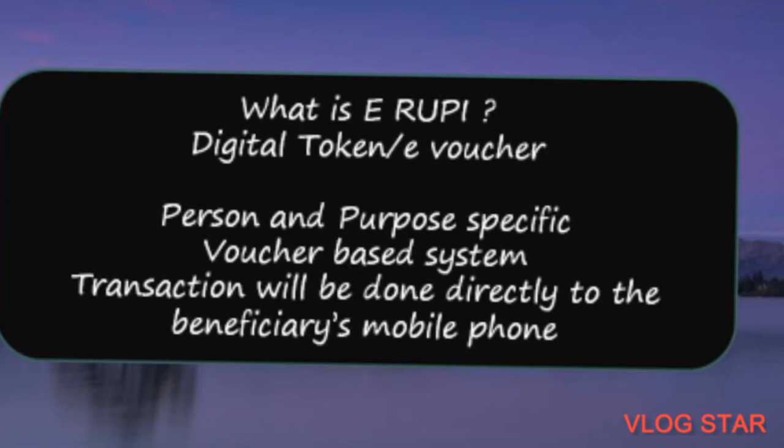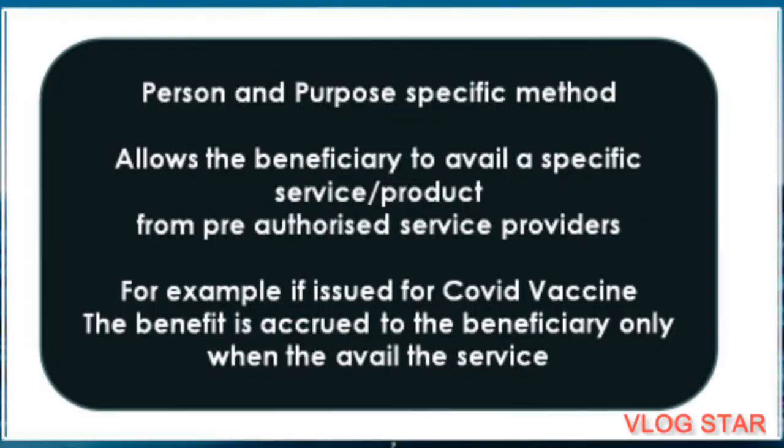E-RUPI is in the form of prepaid digital vouchers which are directly delivered to the mobile phones of beneficiaries. It can be used for purchase of specific goods or services but cannot be converted into cash or transferred to another person. It is a person-specific and purpose-specific payment instrument that works with smartphones and non-smartphones as well.